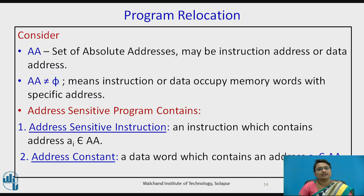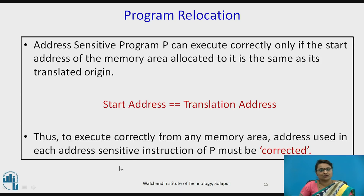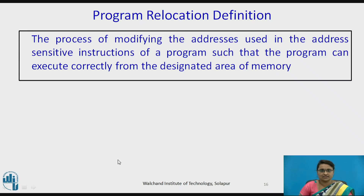An address-sensitive program executes correctly only if the start address of the memory area allocated to it is the same as its translated origin. If the start address equals the translated origin, it is an address-sensitive program. To execute correctly from any memory area, addresses used in each address-sensitive instruction must be corrected — this is called program relocation. The definition: program relocation is the process of modifying addresses used in address-sensitive instructions so that the program can execute correctly from the designated area of memory.